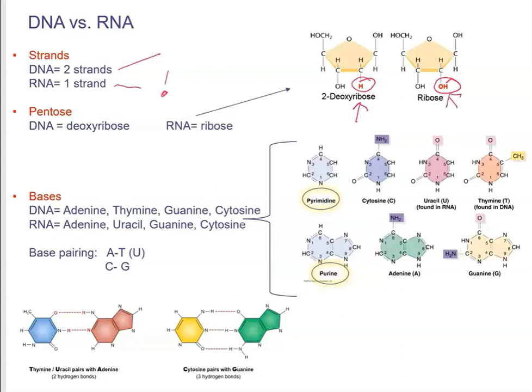This is why we call it deoxyribonucleic acid. Deoxyribose, that means deoxygenated, it lost the oxygen. So that oxygen is only present in the ribose. And then the bases. DNA will have adenine, thymine, guanine, and cytosine. RNA, thymine is replaced by uracil.